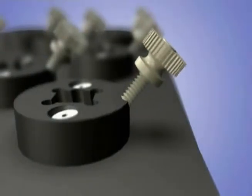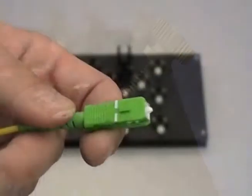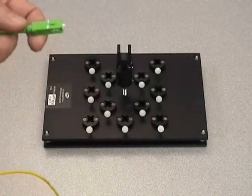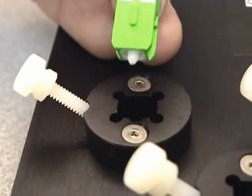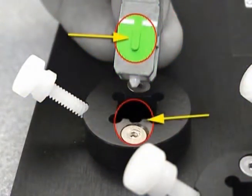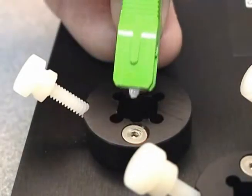Loosen the screws enough to insert the connectors. Insert the SCAPC connectors into the fixture plate. Note that the guide on the top of the connector slides into a slot located in the connector insert of the fixture plate.